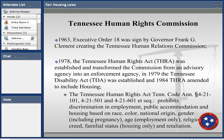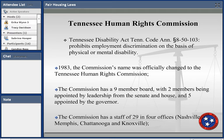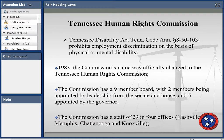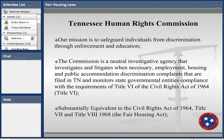In all, between the two laws we have nine protected classes and retaliation. In 1983, the Commission's name was officially changed to the Tennessee Human Rights Commission. We currently have a nine-member board — two members appointed by Senate leadership, two from the House, and five appointed by the governor. We have 29 staff located in four offices, with the central office in Nashville, two investigators in Memphis, two in Chattanooga, and five housing investigators in Knoxville.